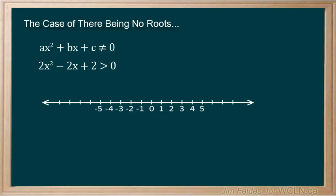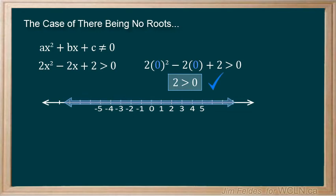If it makes the inequality true, it means that all real numbers are part of the solution. If false, then there are no values in the solution. Testing zero, we see that it's true. So all real numbers are the solution for this inequality.